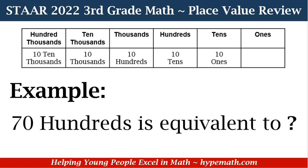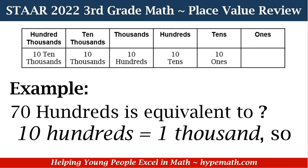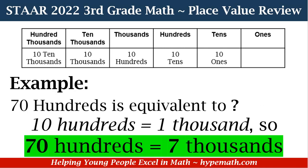We have: seventy hundreds is equivalent to what? In order to discover the answer, we look at our chart. Ten hundreds is equal to one thousand, so seventy hundreds is equivalent to — if you said seven thousands, you are correct! Whenever you're solving these types of problems, you'll have a conversion chart, or you can write one down on your scratch paper.